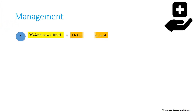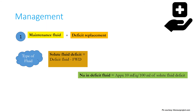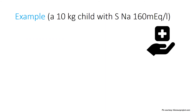In approach one, calculate the solute fluid deficit by taking the total fluid deficit based on percentage dehydration and subtracting the free water deficit. Sodium to be replaced in the deficit fluid is approximately 10 mEq per 100 mL, and sodium in maintenance fluid is approximately 3 mEq per 100 mL. For example: a 10 kg child with serum sodium of 160 mEq/L — maintenance fluid is 1000 mL, deficit assuming moderate (10%) dehydration is also 1000 mL, giving a total of 2000 mL.